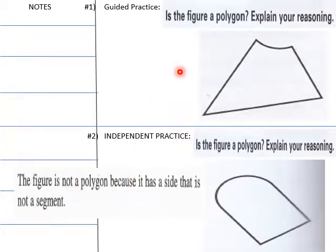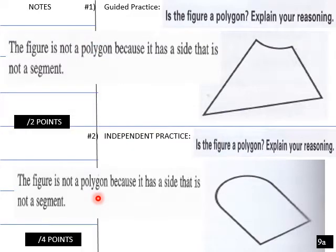The figure is not me, I just throw that one in. But this one here, the figure is not a polygon because it has a side that is not a segment, and then the same thing up here, this is not a line segment. The figure is not a polygon because it has a side that is not a segment. This side here is not a segment.